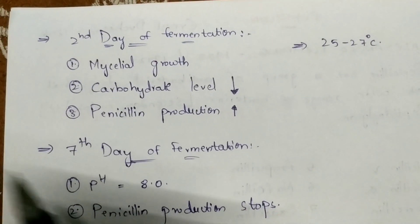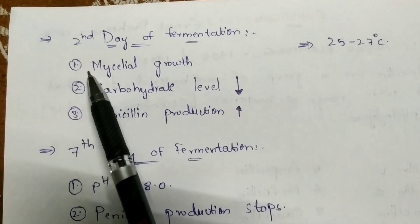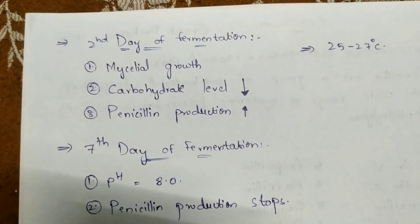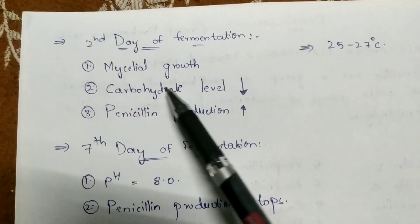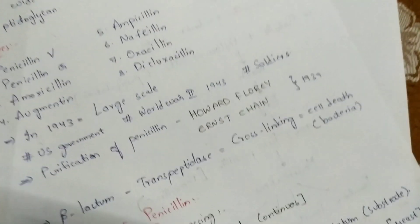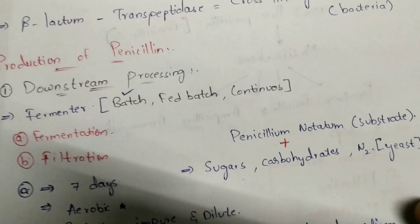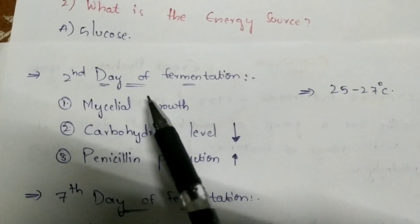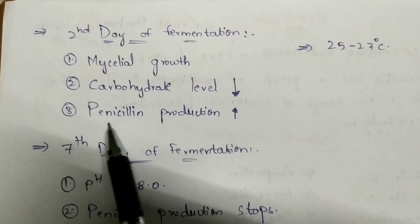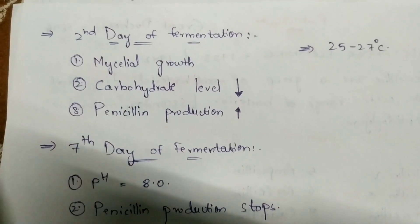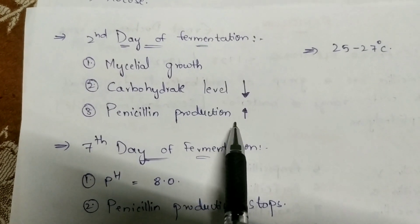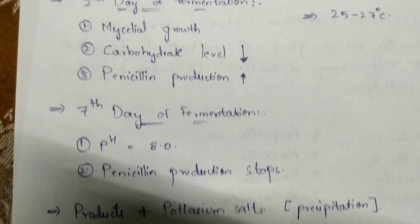During fermentation, at the second day, mycelial growth takes place. Mycelium, which is a type of fungus, grows within the medium inside the fermenter. When mycelial growth increases, the carbohydrate level decreases. And when the mycelial growth decreases, the carbohydrate level also decreases, so penicillin production increases.